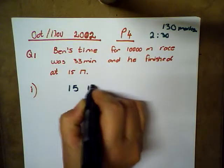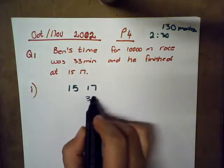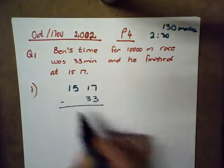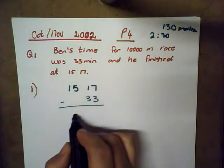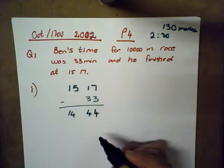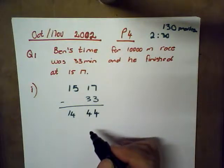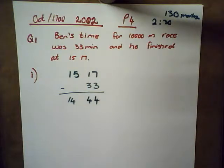So 15:17, he ran 33 minutes, and I've got to do some subtraction. If I do that I will get 14 hours and 44 minutes. So he started at 14:44 and that's the end of that question.